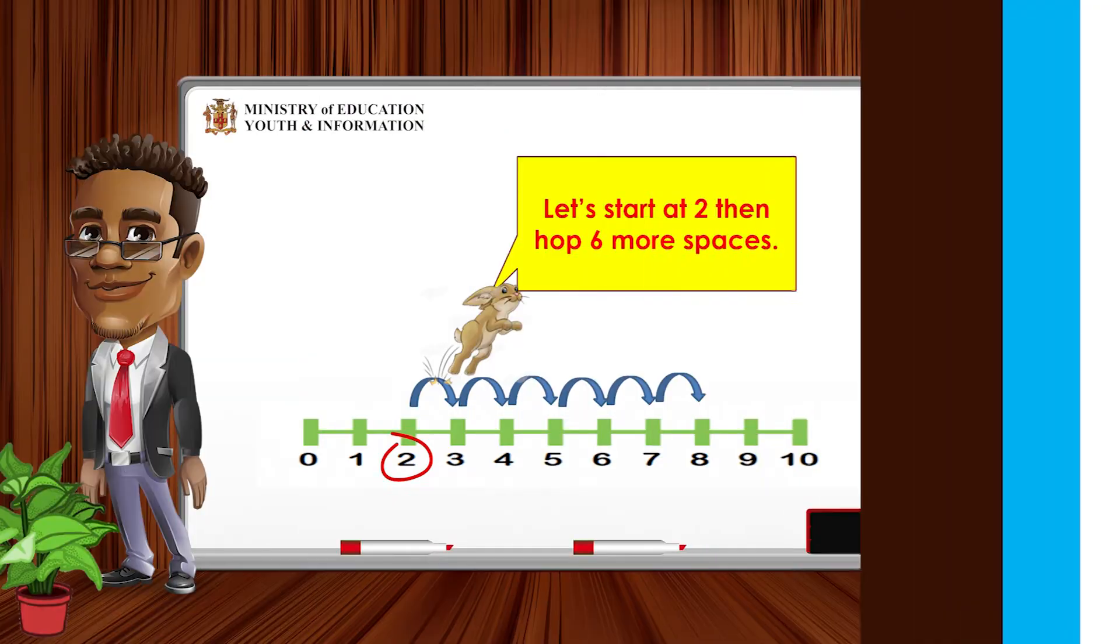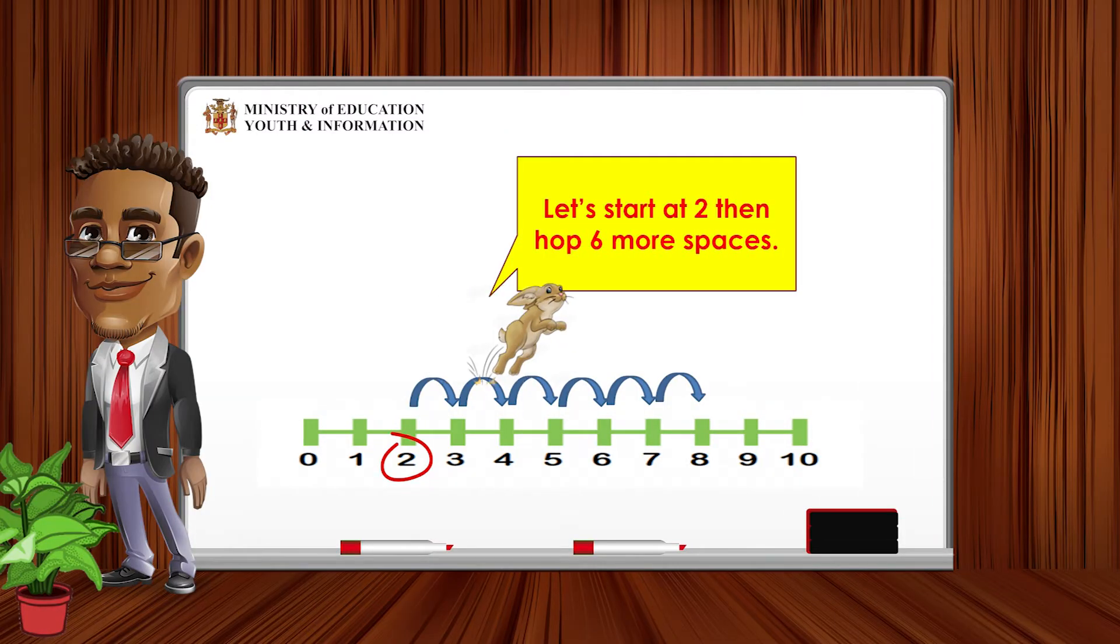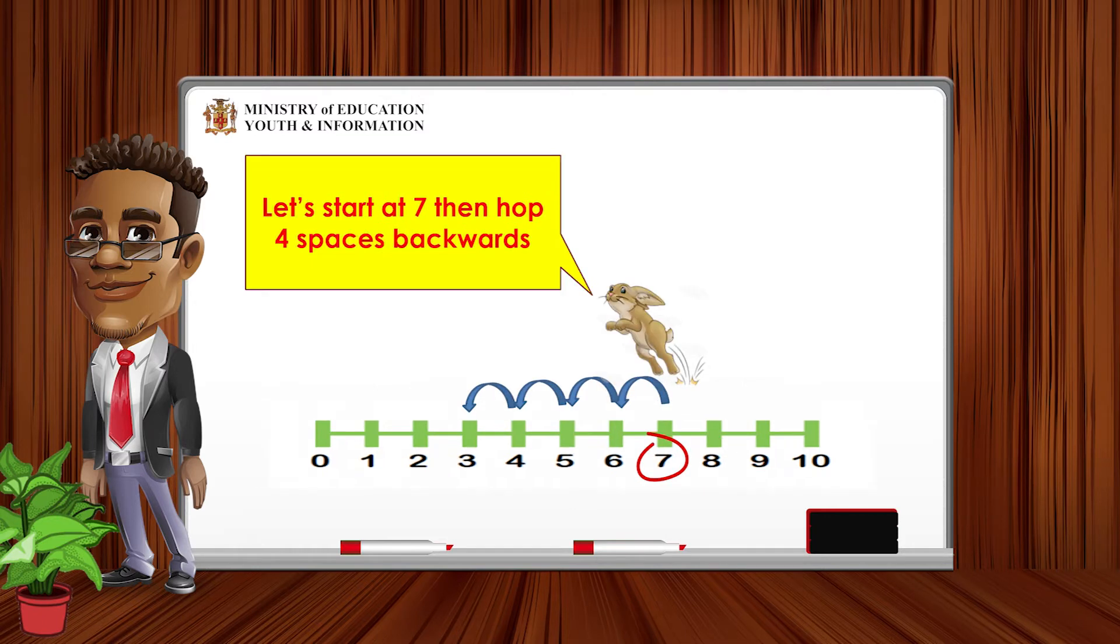Now let's review. Did you notice what happened to the numbers while the bunny hopped along the number line? The numbers get greater when you count on to the right and the numbers get smaller when you count off to the left on the number line.